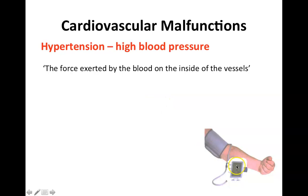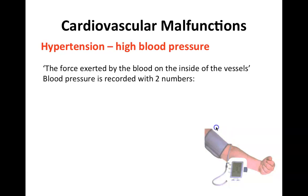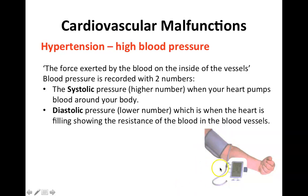These two numbers equate to terms we've already come across. With the heart, we have systole and diastole. Systole is when the heart beats, and diastole is when the heart is relaxed and filling with blood. So 143 is the systolic blood pressure within the artery walls as it beats, and 91 is the pressure within the blood vessels when the heart is relaxing and filling with blood.